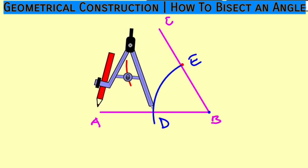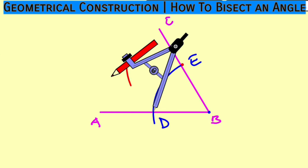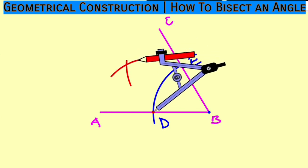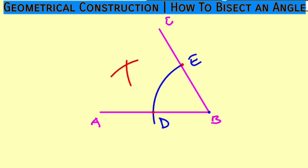Take the compass to point D, then cut the first arc you made. Take away your compass. Label the point of intersection as F. Lastly, use your ruler to connect point F and B together. What you are seeing here is 30 degrees each.